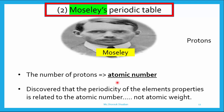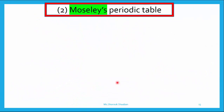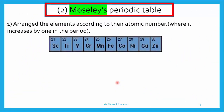Now let's see what Moseley did with the periodic table. Number one, he arranged the elements according to atomic number, not atomic weight as Mendeleev did. For example: scandium, titanium, vanadium, chromium, magnesium — with atomic numbers 21, 22, 23, and so on. The atomic number increases by one for each element as you go from left to right in a period.